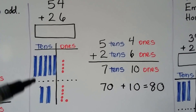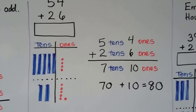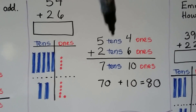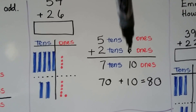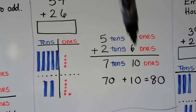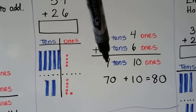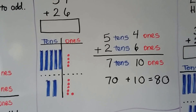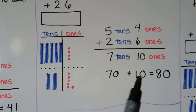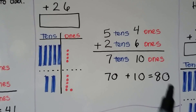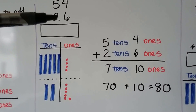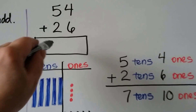We have two tens and six ones. We put the ones on top of each other and the tens on top of each other. We add the ones: 4 plus 6 is equal to 10. We have 10 ones. 5 plus 2 is equal to 7. We have seven tens. Seven tens are 70. 70 plus 10 is equal to 80.